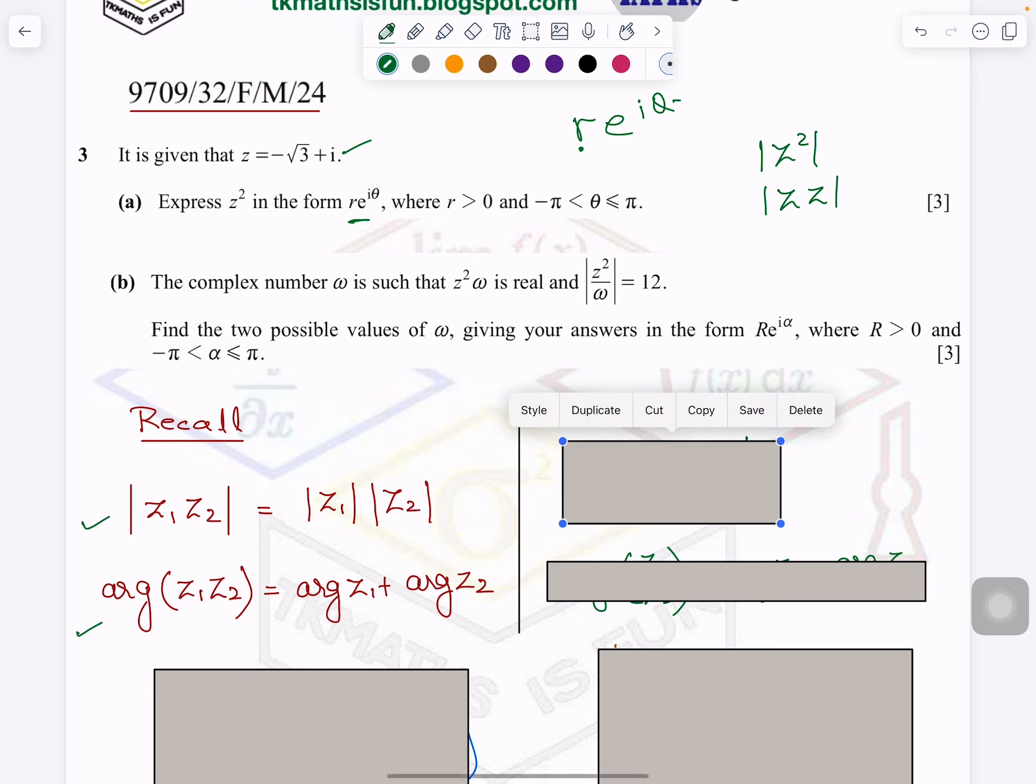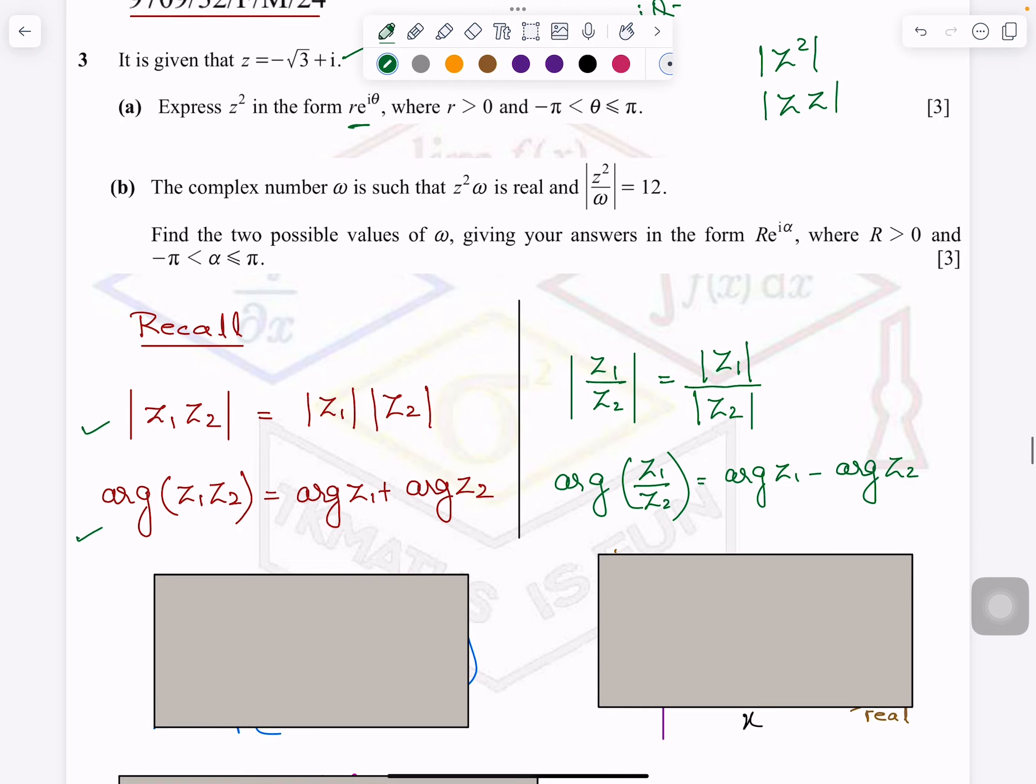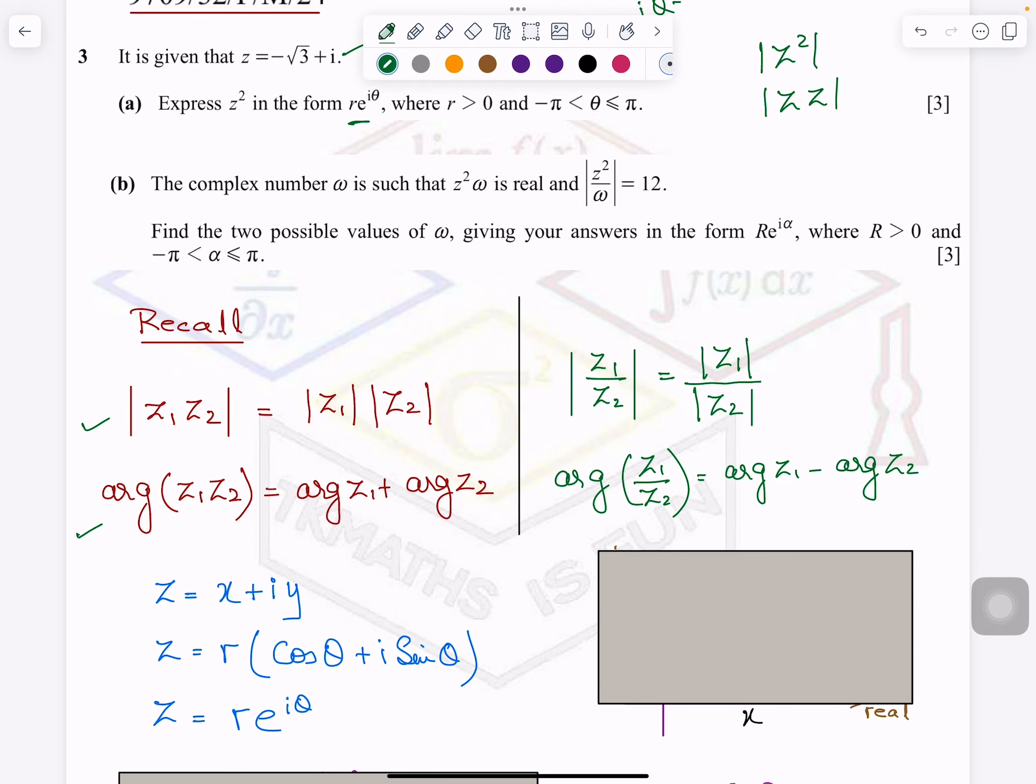And one more thing, the three forms of the complex number you should also know what is the relation between them and things like that. And from the diagram we know that if for any point x, y, which I can write in the complex form x plus iota y.